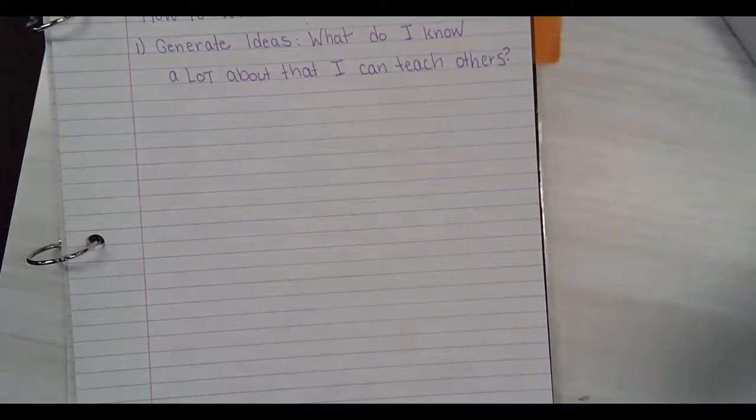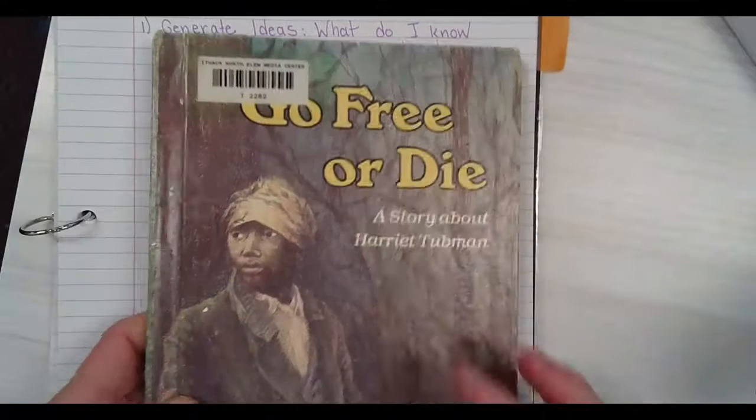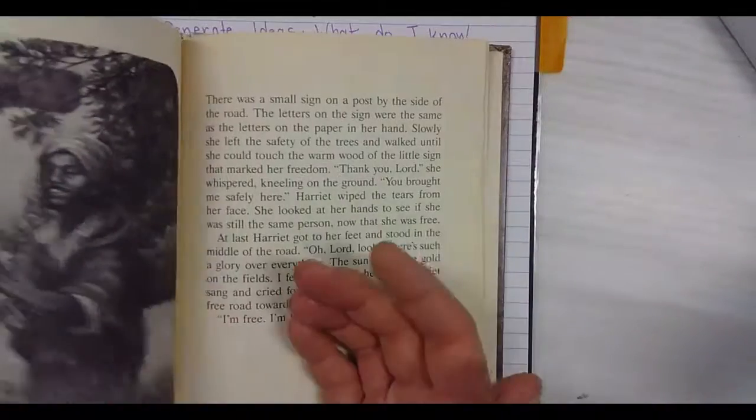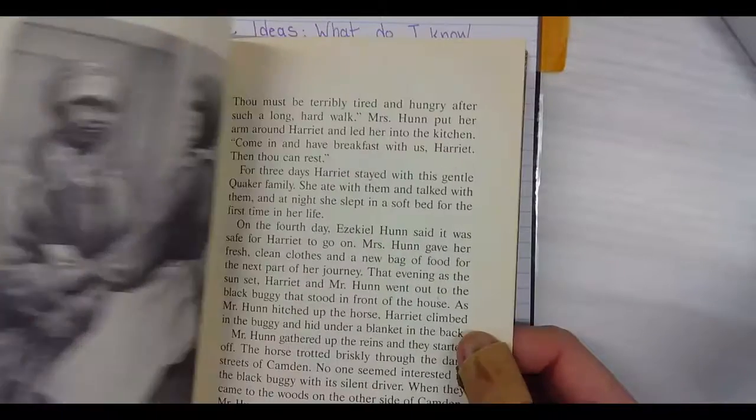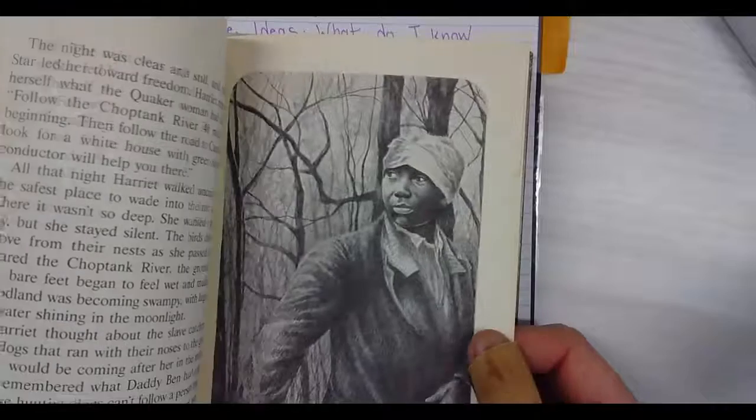Let's see, we got some others over here. Go Free or Die, it's another one about Harriet Tubman. This one looks like it's got black and white, so it's a little bit older. There's chapters.